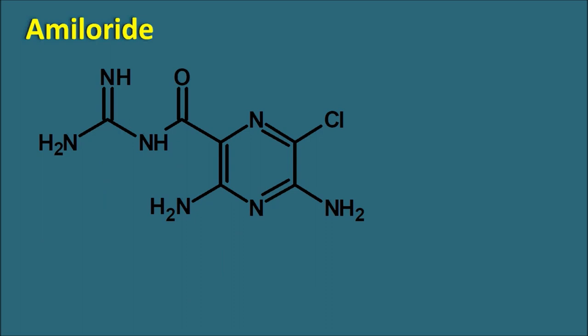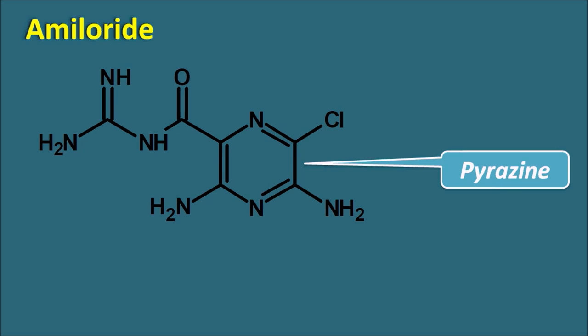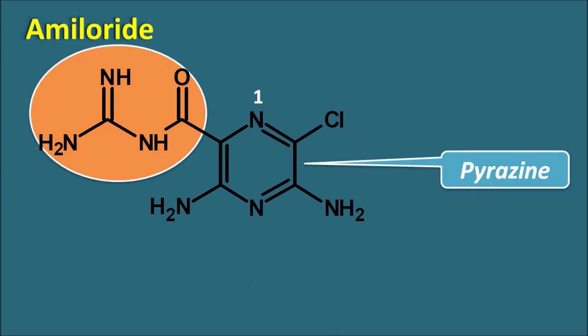One of the drugs in this potassium-sparing diuretic class is amiloride. Amiloride has the structure of a pyrimidine ring system. This pyrimidine is attached with a guanidine moiety. Giving the numbering to this pyrimidine: positions 1, 2, 3, 4, 5, and 6. The guanidine moiety is attached at the second position through the carbonyl group.